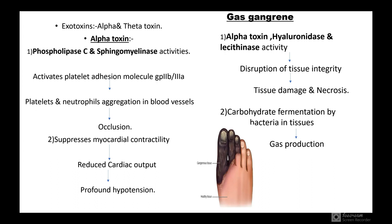Alpha toxin is phospholipase C and sphingomyelinase. It activates the platelet adhesion molecule GP2B/3A, causing platelet and neutrophil aggregation in blood vessels leading to occlusion. It suppresses myocardial contractility, reduces cardiac output, and causes profound hypotension. Alpha toxin, hyaluronidase, and lecithinase activity cause disruption of tissue integrity leading to tissue damage and necrosis. Carbohydrate fermentation by bacteria in tissues causes gas production, leading to gas gangrene.